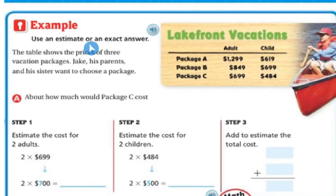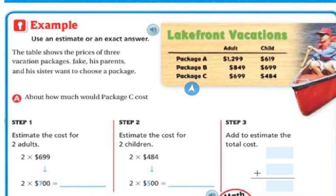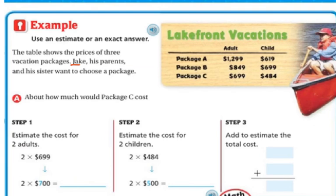Now let's use an estimate or an exact answer. The table shows the prices of three vacation packages. Jake, his parents, and his sister want to choose a package. Package A is $1,299 for an adult and $619 for a child. Package B is $849 for the adult and $699 for the child. Package C is $699 for the adult and $484 for the child. Jake and his sister are two children, and his parents are two adults.